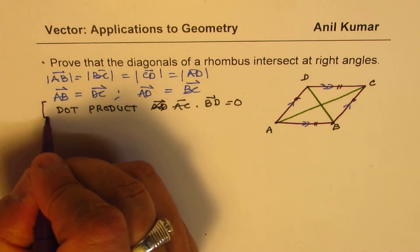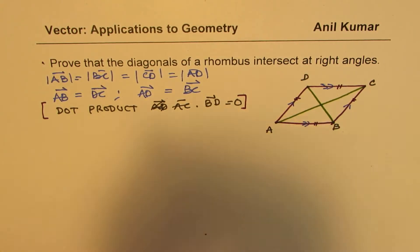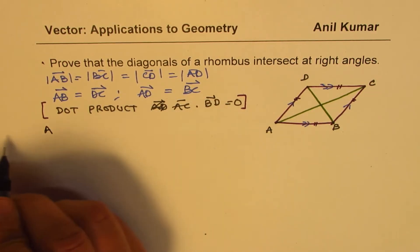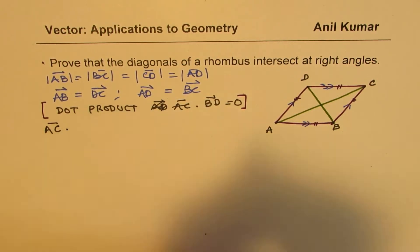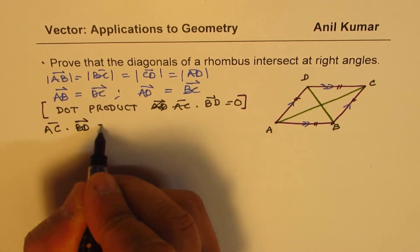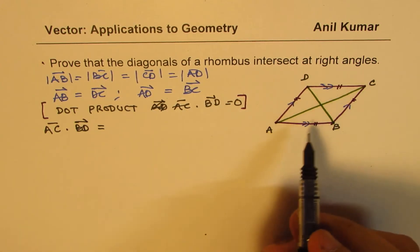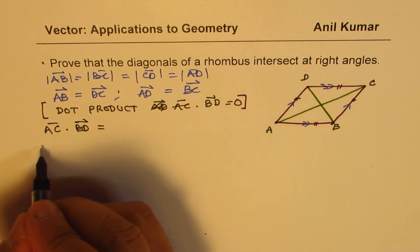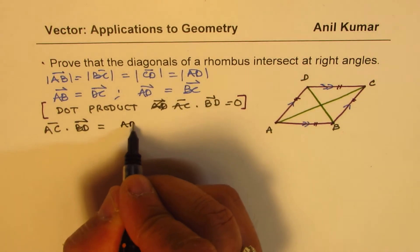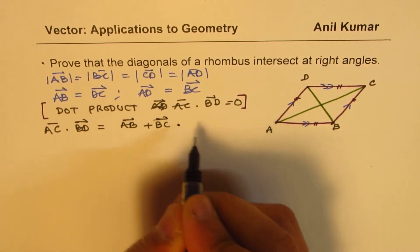Let's begin by finding the dot product of AC with BD. AC can be written as a combination of AB and BC, so we write this as (AB + BC) dot ...